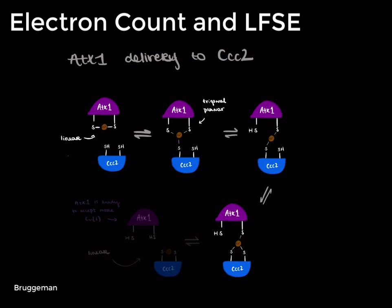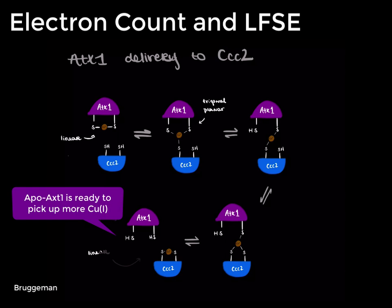This capacity is also enabled by the electron count, with 10 electrons from the metal and two from each sulfur, which has not yet reached its capacity of 18. Thus, the geometry is able to transition from linear to trigonal planar before breaking the bonds with ATX1 and returning to a linear geometry at the CCC2 site.